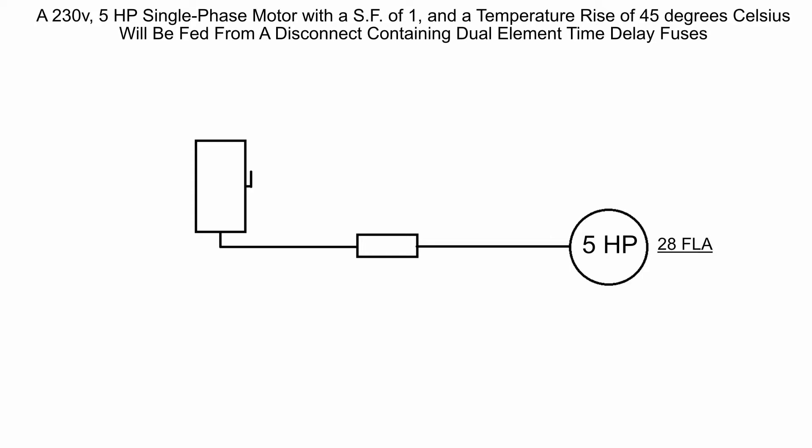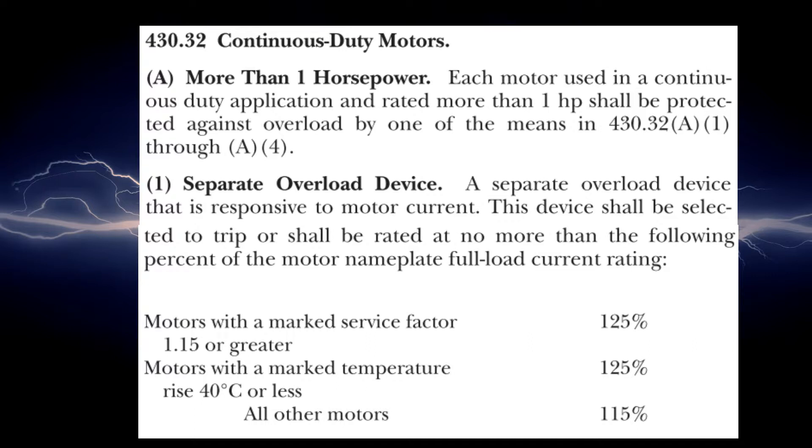To do the thermal overloads, that's the first step we need to look over to 430.32. This is the continuous motor duty motors that's going to tell you what type of devices that you need. If we look at 430.32(A)(1), it's going to say a separate overload device that is responsive to motor current shall be selected to trip or shall be rated at no more than the following percent of the motor nameplate full load current rating. We don't have the full load current rating of the nameplate so we're going to use the full load amps.